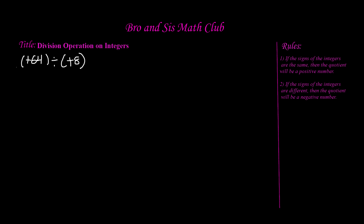We can see the signs of our integers are the same because we have two positive numbers, so the quotient will be a positive number. First we divide, then we put our positive sign in the answer. We can write this in fraction form: positive 64 over positive 8. We know that 8 goes into 64 eight times, so our answer is 8, and since the quotient is positive, positive 64 divided by positive 8 equals positive 8.